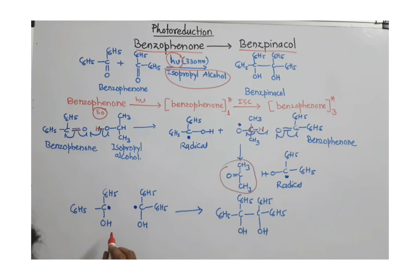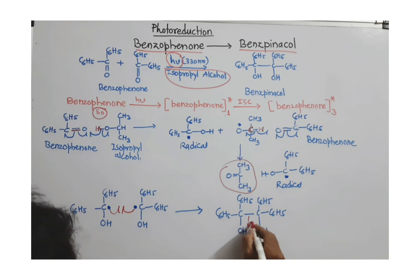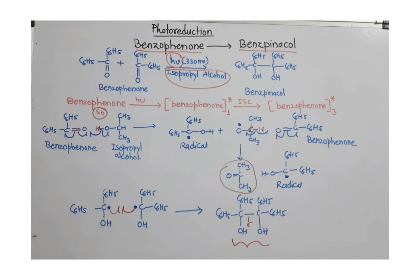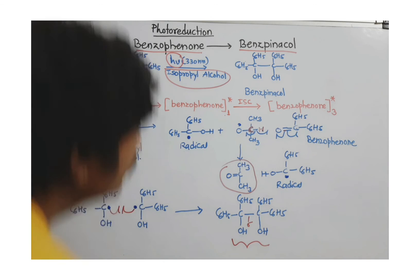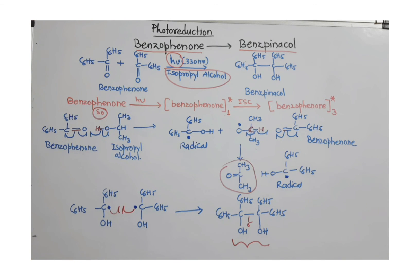These two similar radicals now forming a sigma bond because they are having one electron each. These two electrons coming together to form this sigma bond and we get our desired product that is benzophenone. In this way, this photoreduction occurs. Thank you.